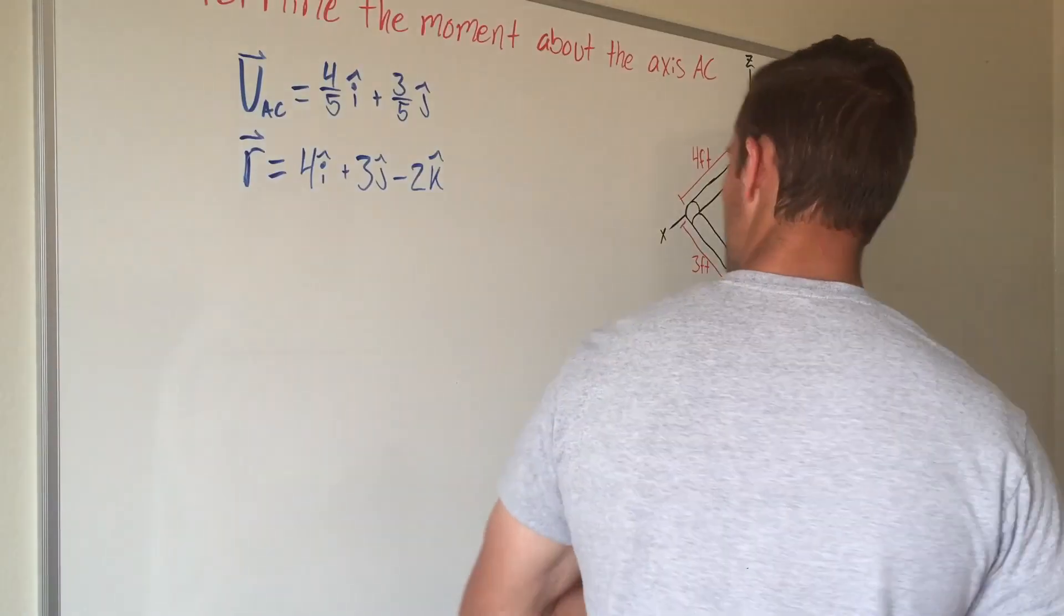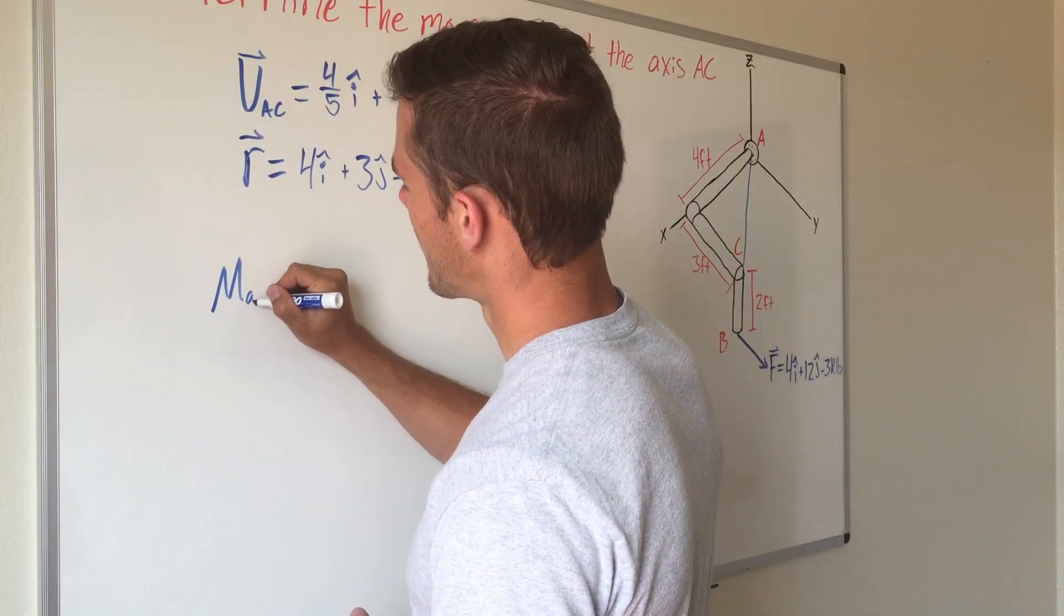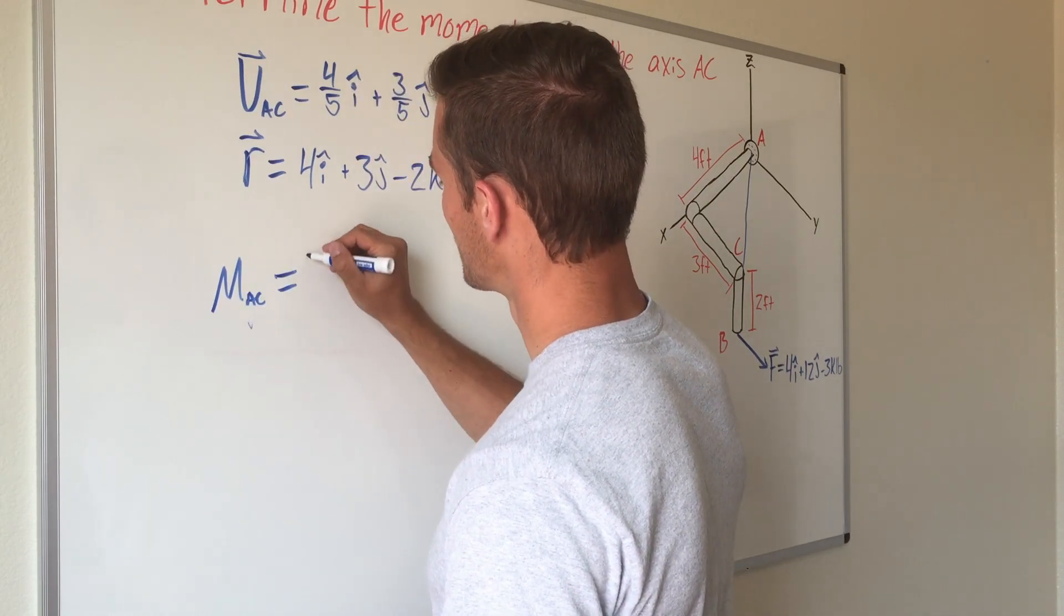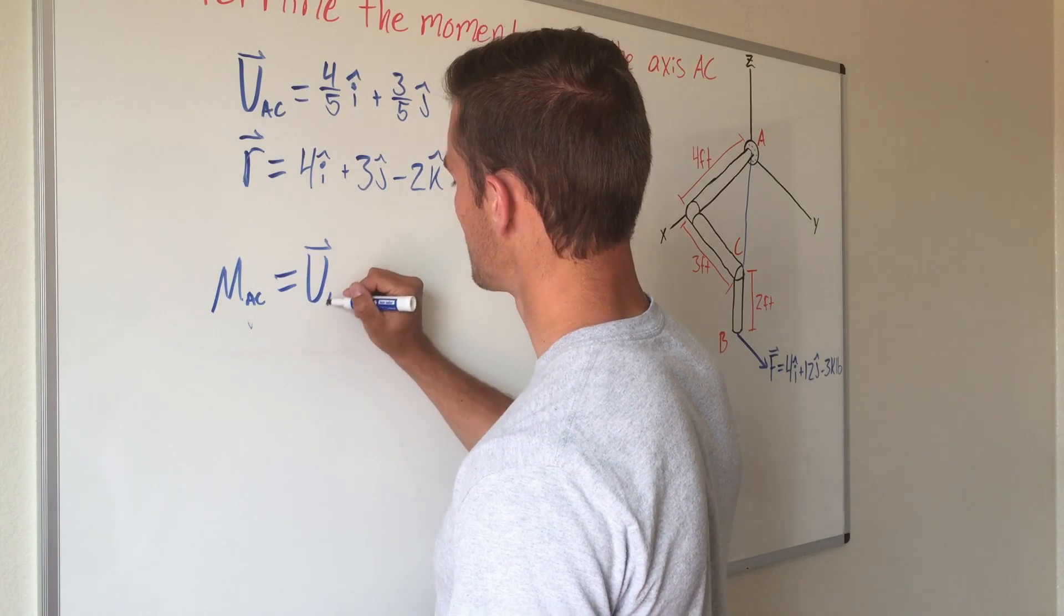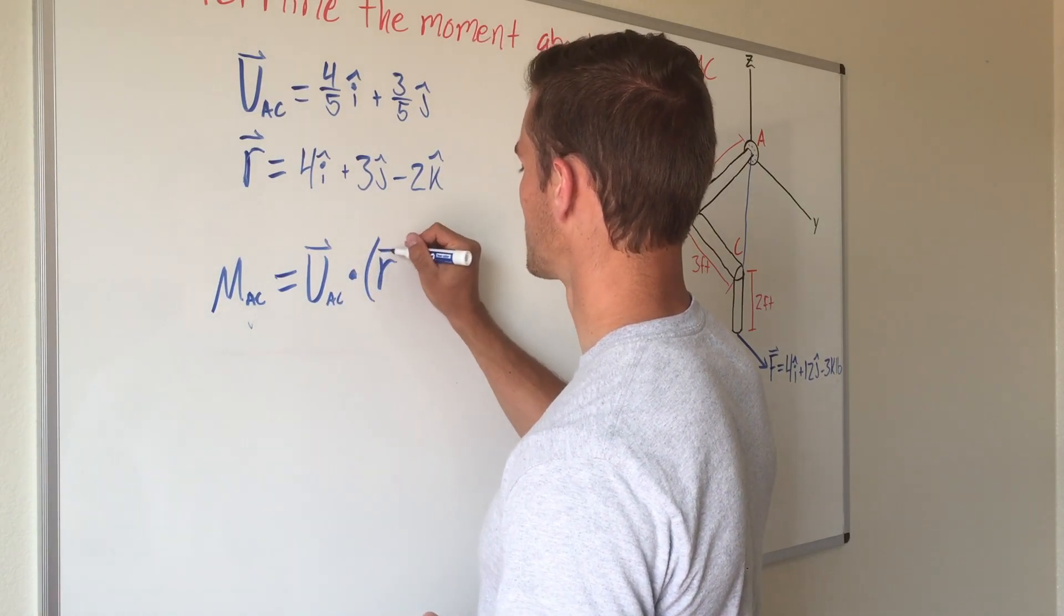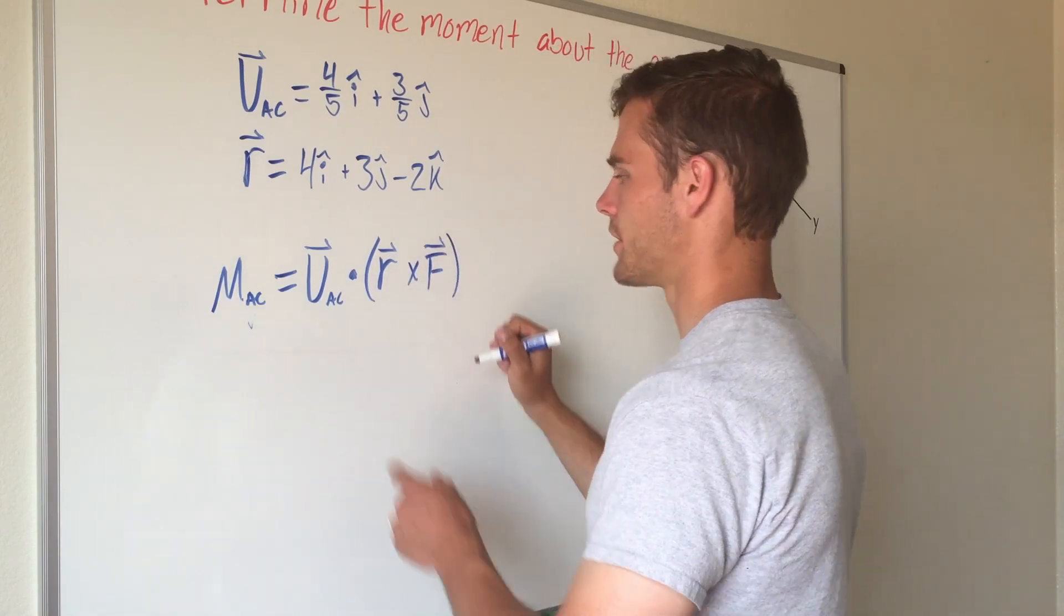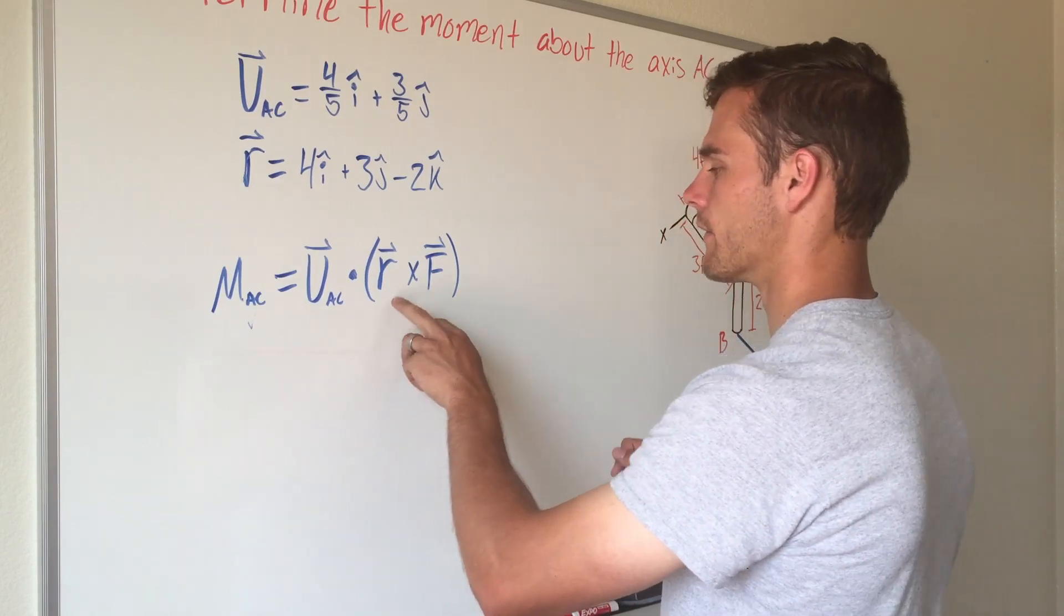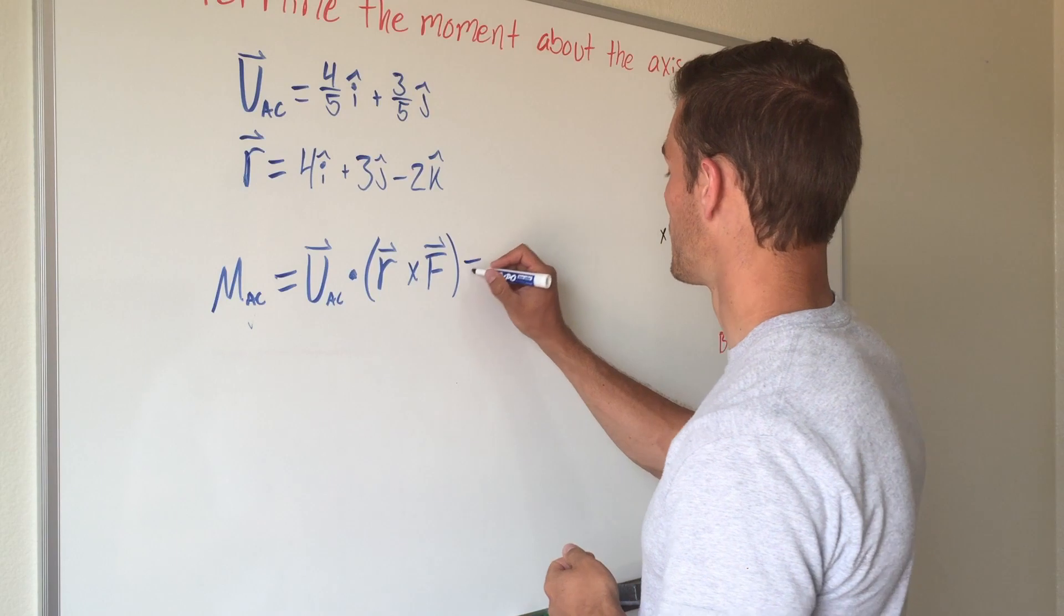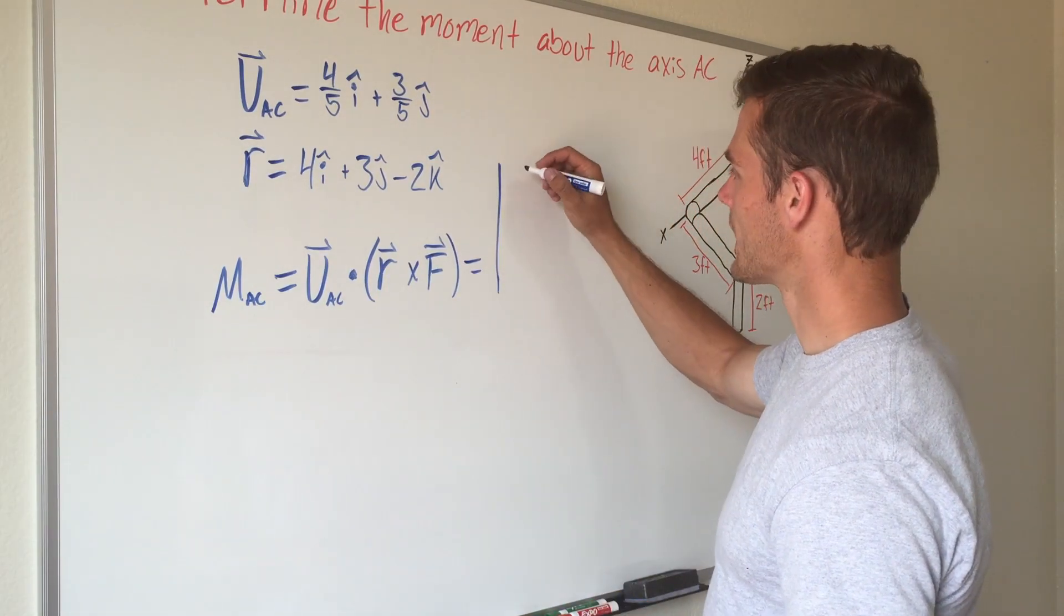To give you a reminder, our magnitude for our moment about AC is equal to the dot product of our unit vector AC with the cross product of our moment arm and our force vector. So it's the dot product of R cross F, and that will look like the determinant form.